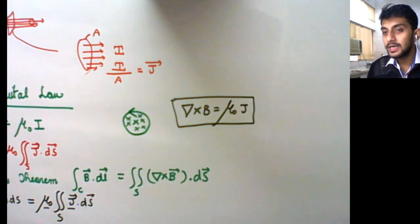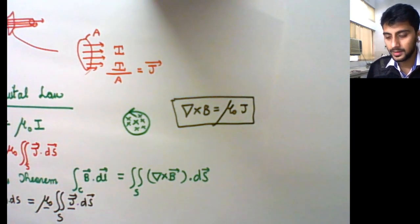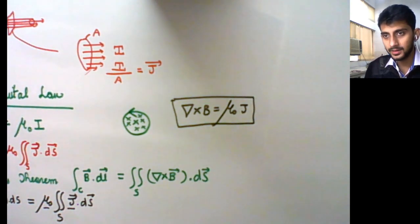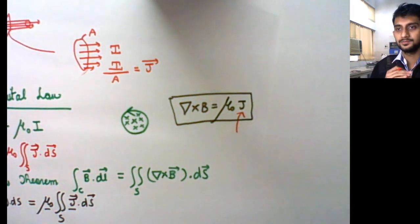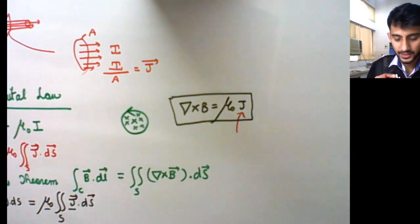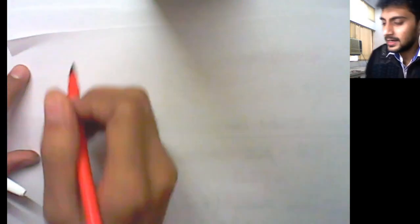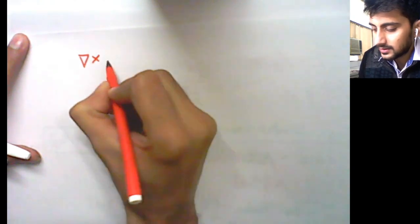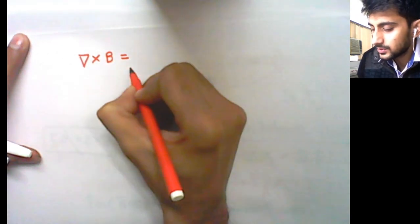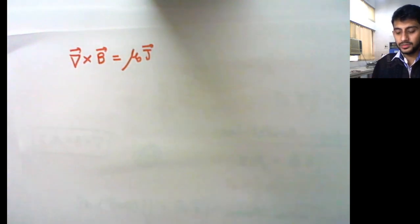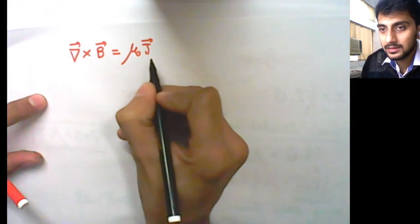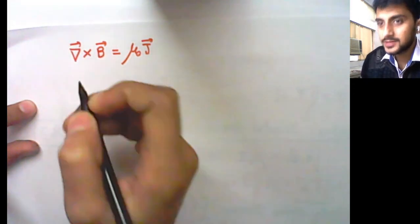This topic of displacement current was already discussed in lecture 2 of this unit. Therefore, the term including displacement current will also be included because of Maxwell's correction. Earlier we only had curl of the magnetic field equals mu naught J. Now we will have to replace J, which is only the conduction current, with displacement current as well.